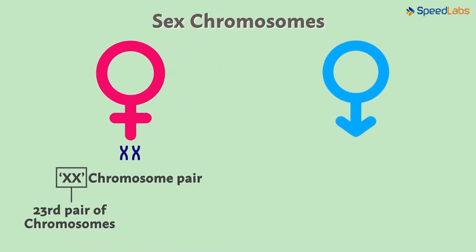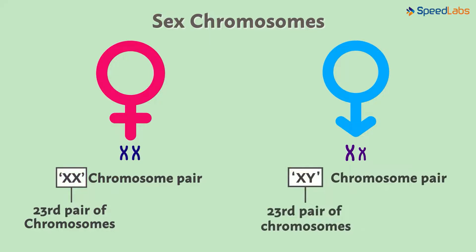What about the male parent? The male sex chromosome is also made up of two chromosomes. One is a normal X chromosome, while the other is made up of two short strands — the former represented by the letter X, and the latter represented by the letter Y. So the 23rd pair of chromosomes of the female parent is represented as XX, while the 23rd pair of the male parent is represented as XY.